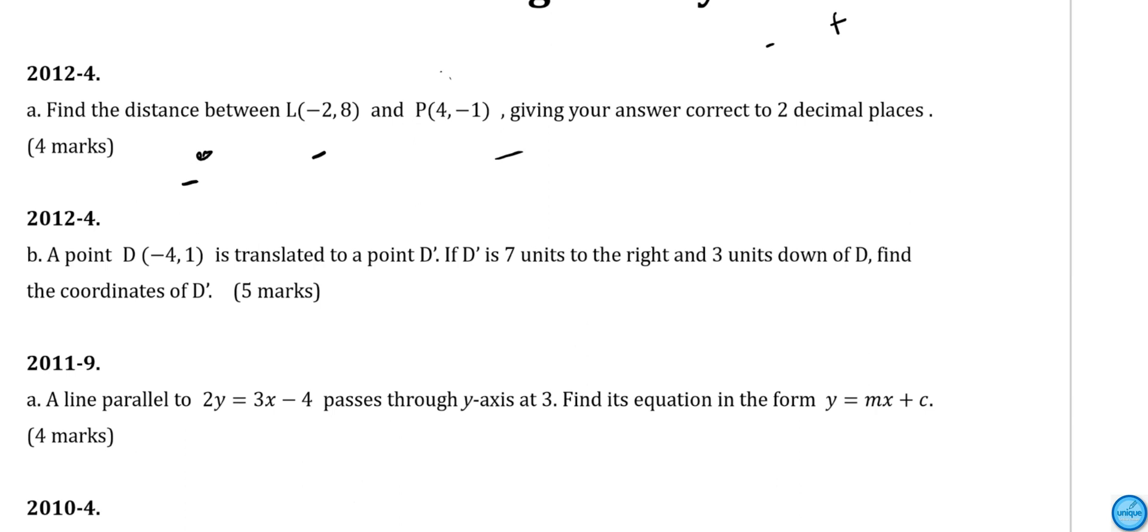A line parallel to this one passes through the Y axis. We should find its equation in the form Y equals MX plus C. For parallel lines, they don't meet and they have the same gradient. We need to find the gradient of this one. We should write this equation in form of Y equals MX plus C. The gradient is 3 over 2.